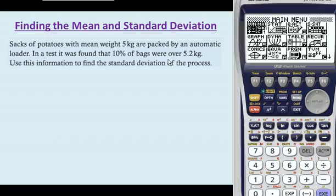If we have some sacks of potatoes, we know the mean weight is 5 kilograms, and they're packed by an automatic machine. A test found that 10% of the bags were over 5.2 kilograms. We need to use this information to find the standard deviation of the process.